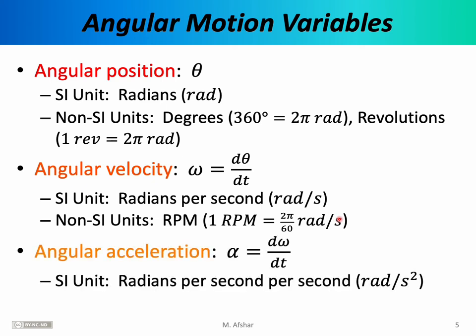The angular velocity of an object could also change — a spinning disk could slow down or speed up. The rate at which angular velocity changes is angular acceleration, denoted by the Greek letter alpha. It is the derivative of omega with respect to time, or equivalently the second derivative of theta with respect to time. The SI unit of angular acceleration is radians per second squared.